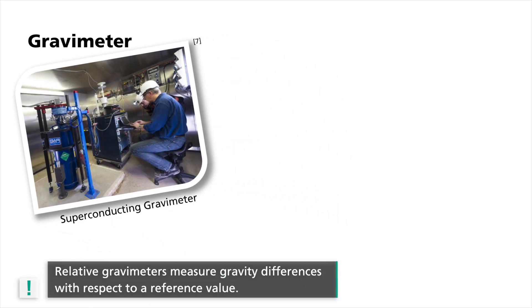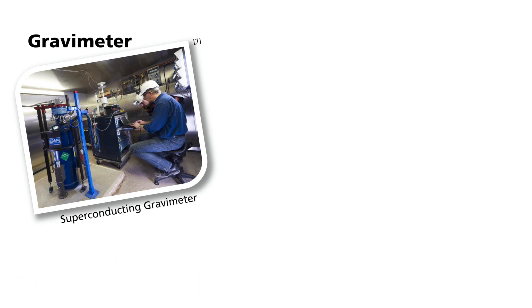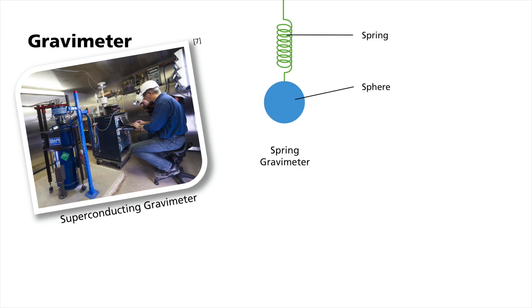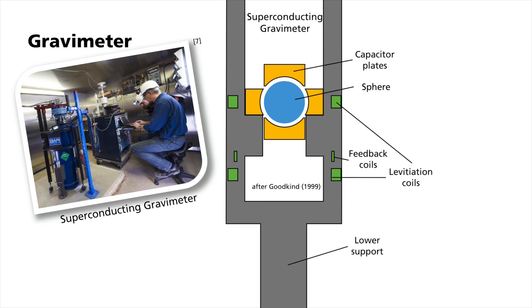Gravity is vertical acceleration and is measured with gravimeters. For measuring earth's tides, relative gravimeters are used — they measure gravity differences with respect to a reference value. Typically, these devices are realized mechanically by a mass that is suspended on a spring, measuring the difference in stretching due to gravity. The most powerful instruments currently are superconducting gravimeters, which use magnetic levitation to suspend the probe mass.